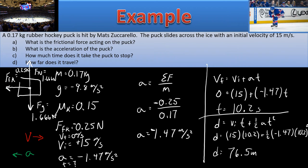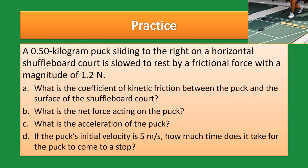Hopefully you tried that on your own and got those answers. Now let's try this one: a 0.5 kilogram puck is sliding to the right on a horizontal shuffleboard court and is slowed to rest by a frictional force with a magnitude of 1.2 newtons. What is the coefficient of friction? What is the net force? What is the acceleration? And if the puck's initial velocity is 5 meters per second, how much time does it take to stop?